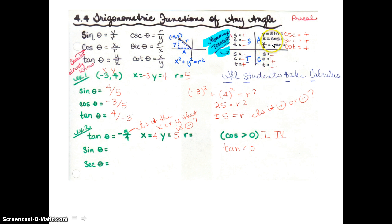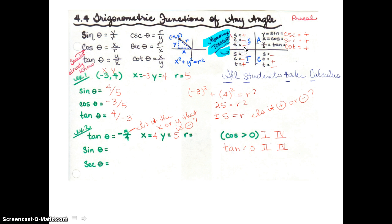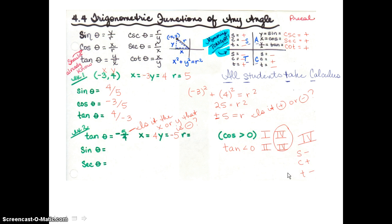Cosine is positive in the first quadrant and in the fourth quadrant. We also know that tangent is less than zero since tangent was negative 5 fourths, so we look at where tangent is less than zero — that's in the second quadrant and the fourth quadrant. So the only place where both cosine is positive and tangent is negative is in the fourth quadrant. In the fourth quadrant, x is positive and y is negative, so the negative goes with the five.